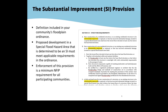The substantial improvement provision, defined in your community's floodplain ordinance, means any proposed development in a special flood hazard area that has been determined to be an SI must meet the applicable requirements in your ordinance — the same requirements that apply for new construction in a special flood hazard area. Enforcement of this and all other minimum NFIP requirements is required for all participating communities.